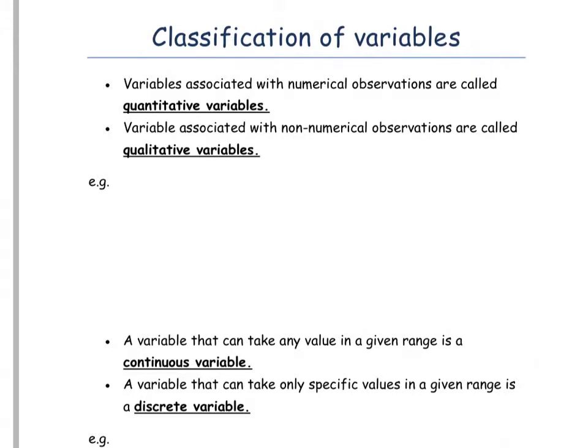It's important to know whether you're working with qualitative or quantitative data when finding mean, median, and mode. When finding the mean, you can only do that with quantitative data — numerical values. You cannot find a median for qualitative variables because you don't have numerical values to put in order, whereas you can find the mode for qualitative data.